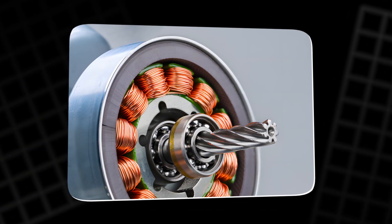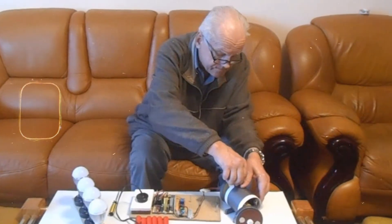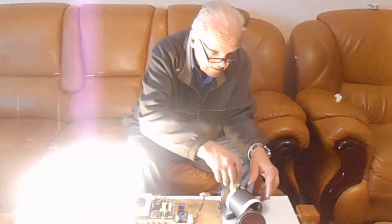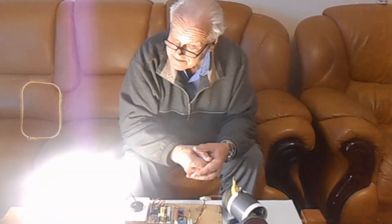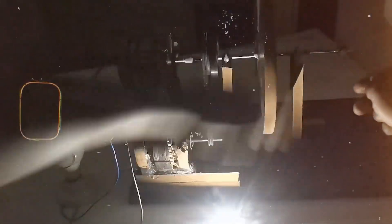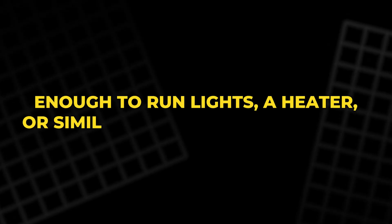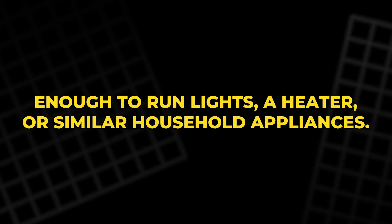The current machine is only a prototype. It was built mainly to illustrate the operating principles and to prove, at least to its creator's satisfaction, that the concept can work on a small scale. In its present form, it can deliver only a modest amount of power, enough to run lights, a heater, or similar household appliances.